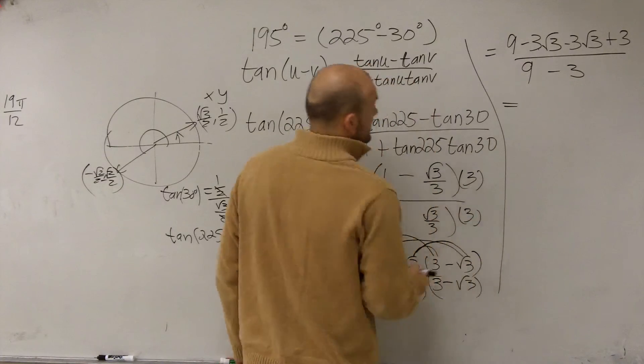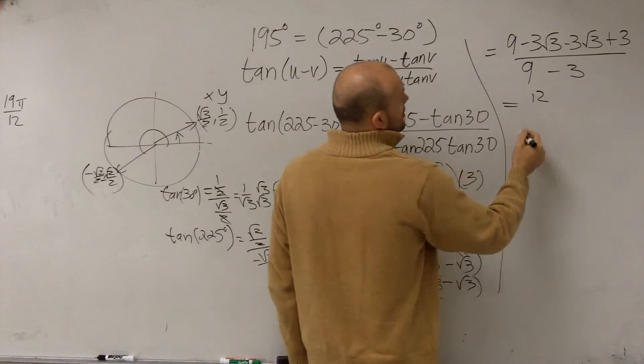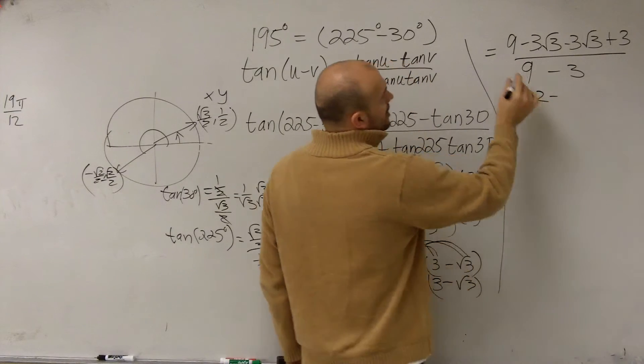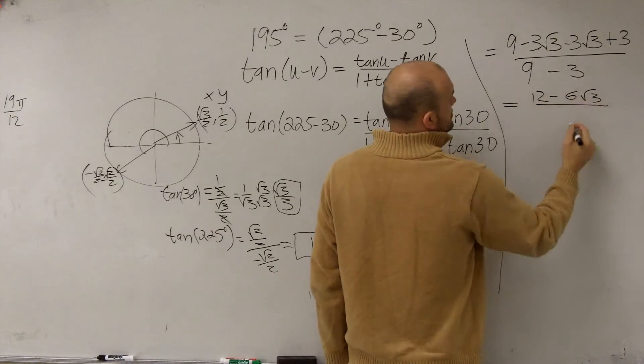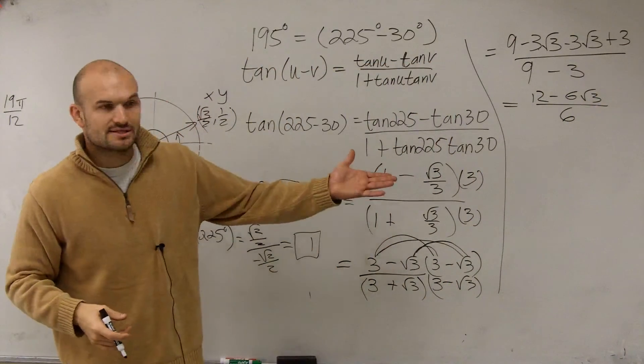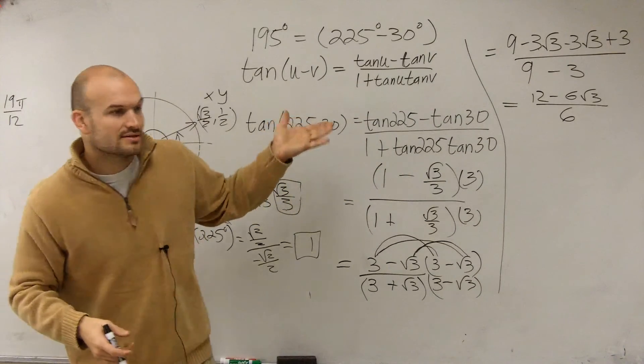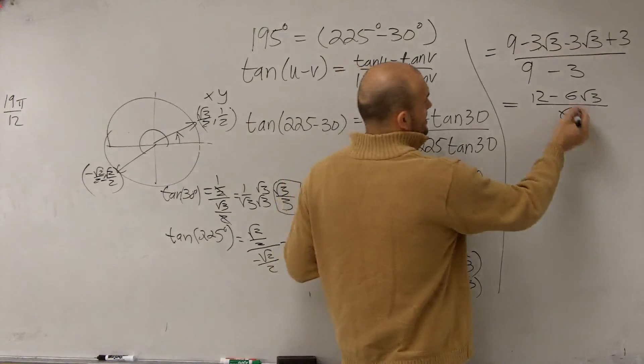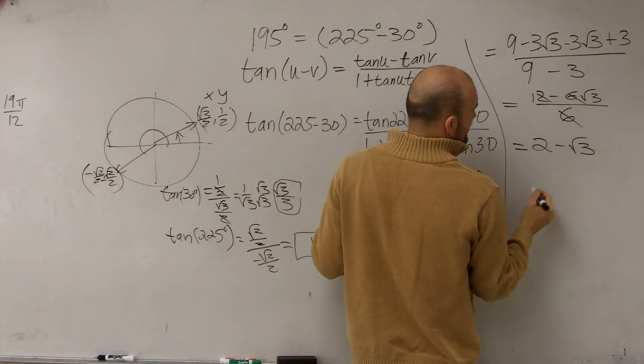Then 3 times 3 is 9. And square root of 3 times negative square root of 3 is going to be a negative 3. Set this equal to each other again. So now I have 9 plus 3 is going to be 12 minus 6 square root of 3 over 6. Now you look at this and say, what can you factor out? You can factor out a 6. Or no, you can't factor out. You can just divide out a 6. And you're just left with a 2 minus the square root of 3.